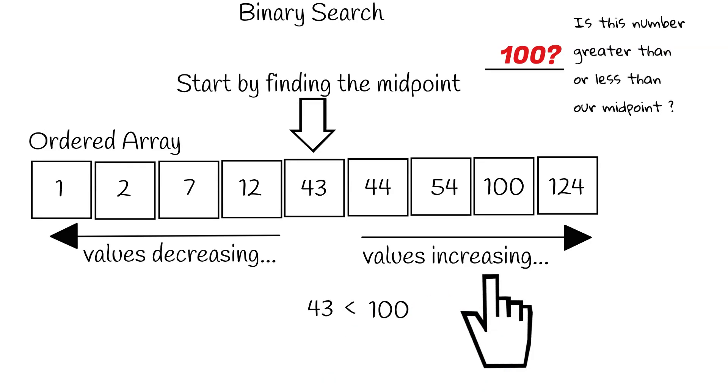To paint a full picture, let's for one second pretend that the number we are searching for is two and not 100. In this case, two would be less than our midpoint 43. Therefore, it will be on the left side.